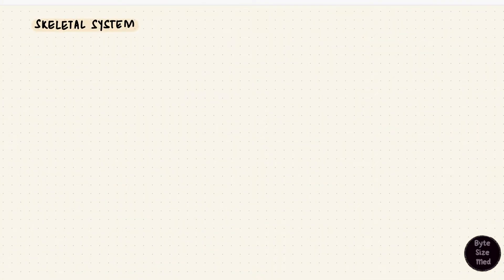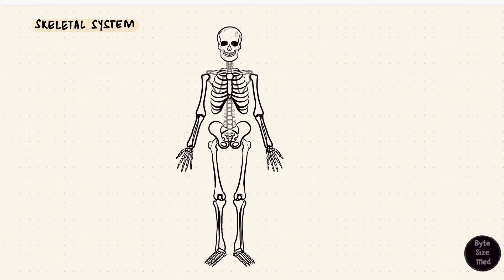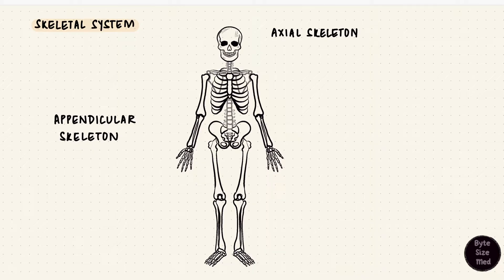Bones form the skeletal system in the body, and that skeleton can be divided into two: the axial skeleton and the appendicular skeleton. The axial skeleton includes the bones that are towards the midline, like the skull, the vertebral column, and the thoracic cage. The appendicular skeleton includes the rest of the bones — basically the ones that form the limbs or appendages.